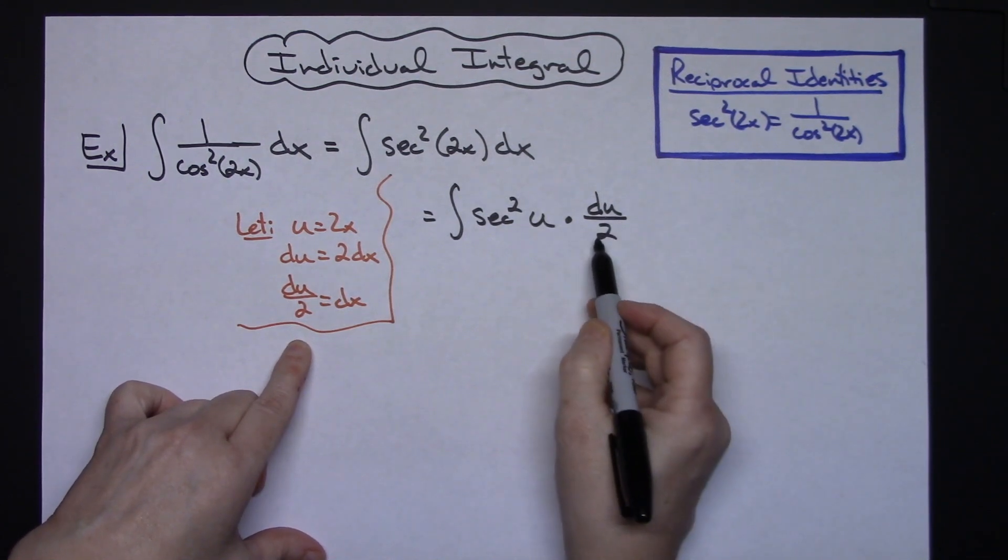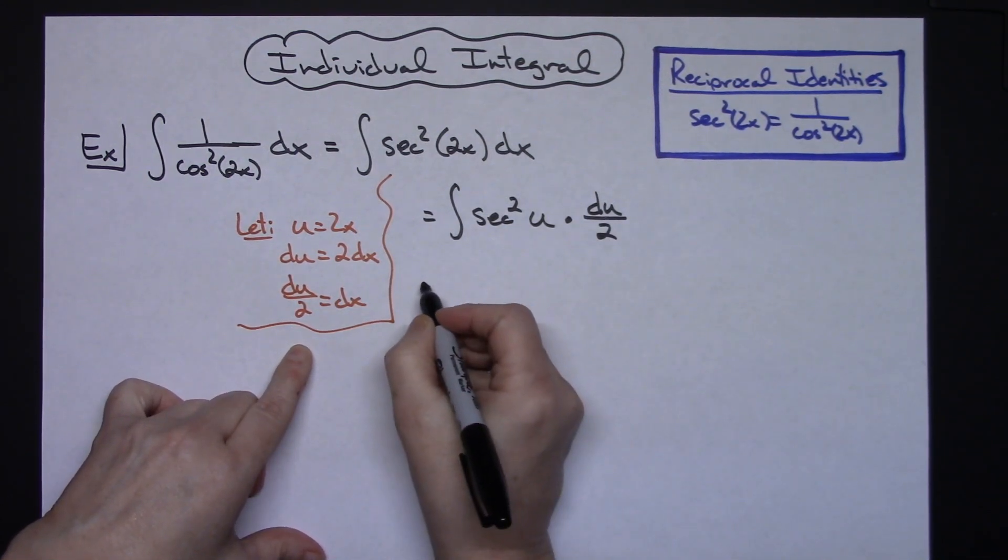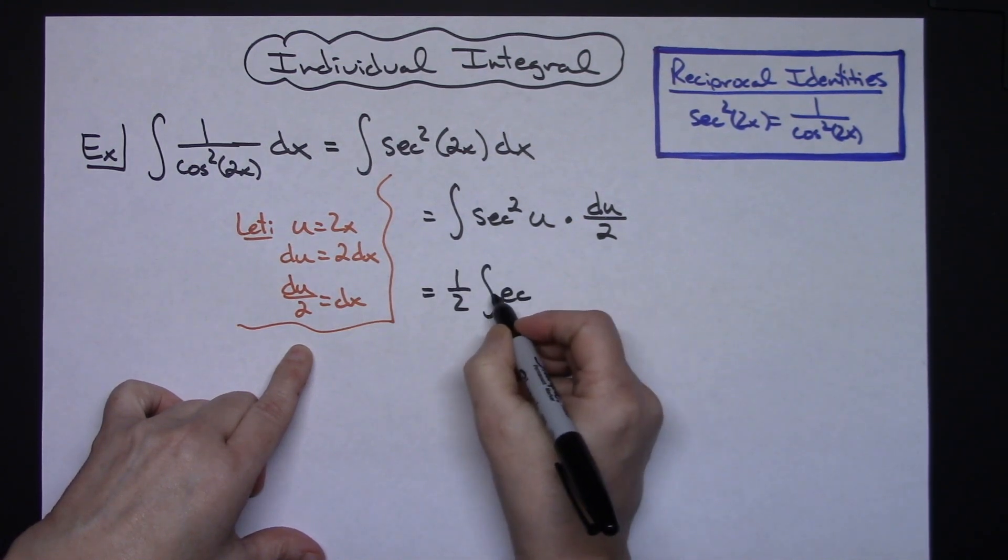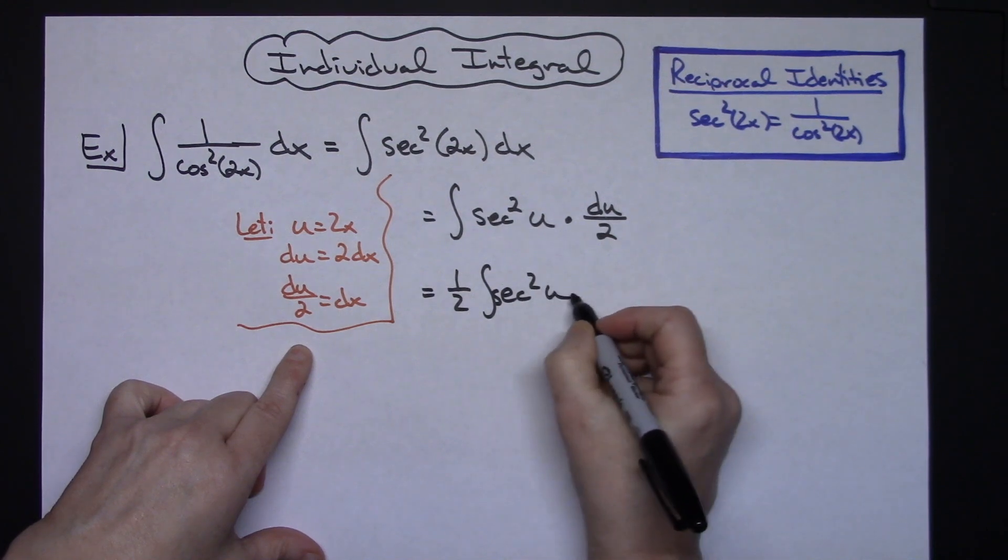What that's going to allow me then to do is to pull out that 1 half. So I'll have 1 half the integral of secant squared u du.